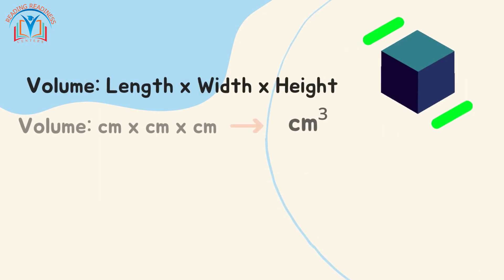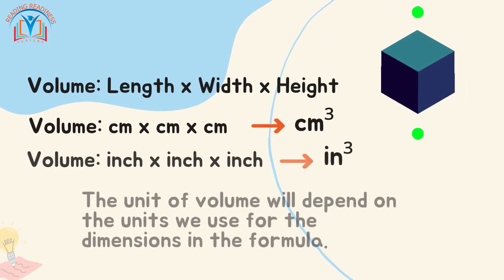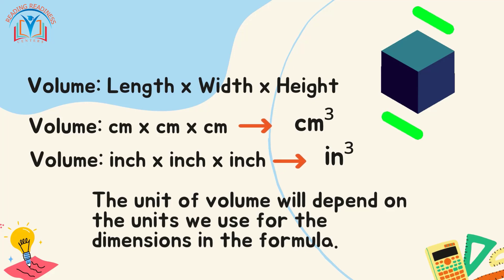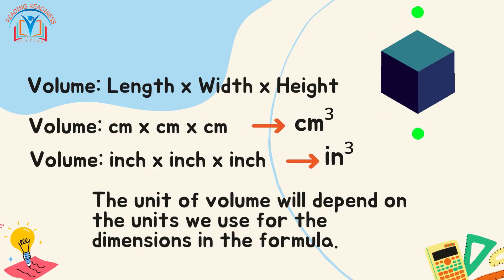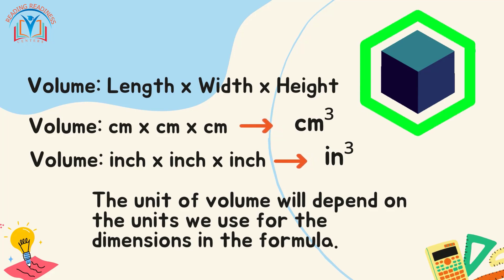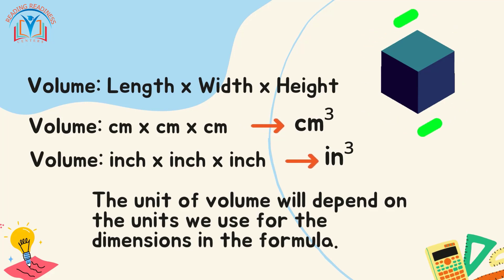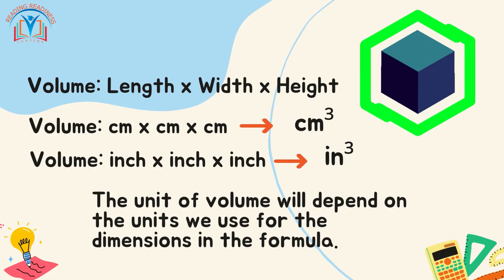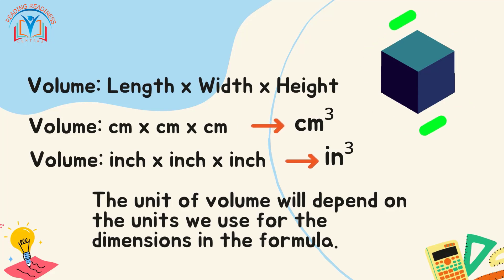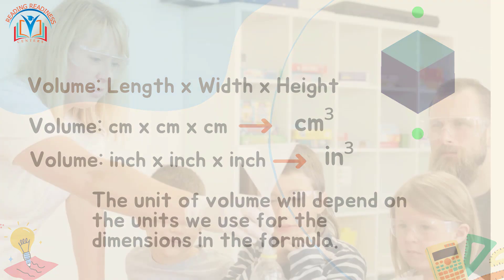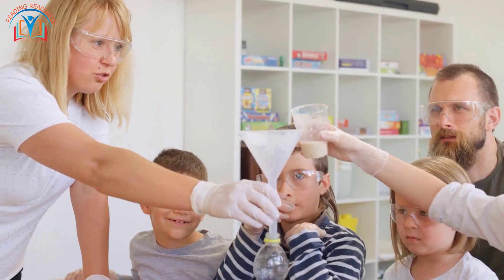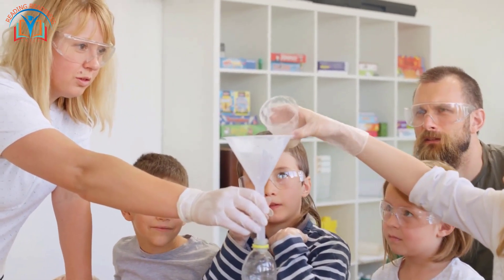When we use the formula for volume — length × width × height — the resulting volume is expressed in cubic units. For instance, if we measure all our dimensions in centimeters, then our volume will be in cubic centimeters (cm³). If we are working with inches, the volume will be in cubic inches (in³). The unit of volume depends on the units used for the dimensions in the formula.